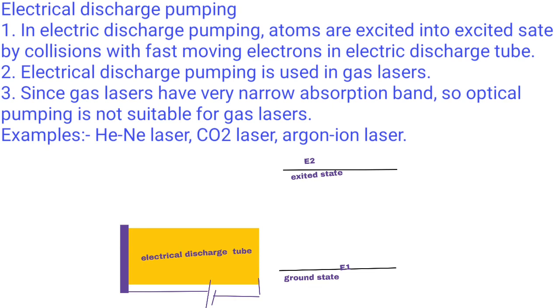Electrical discharge pumping: In electric discharge pumping, atoms are excited into excited states by collisions with fast-moving electrons in electric discharge tubes. Electrical discharge pumping is used in gas lasers.